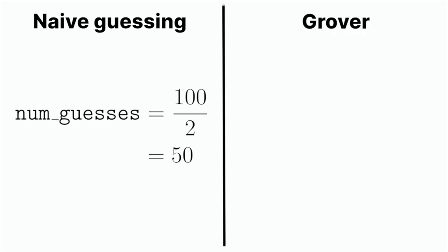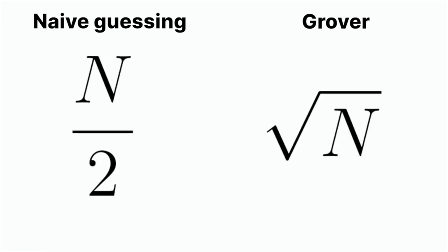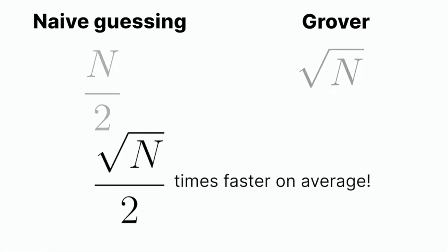What Grover says is that using these quantum ideas, only asking a square root of N, square root of 100, which means 10 questions, we will be able to know what is my favorite number. And this is the important point. The quadratic speedup is in the average amount of questions that we have to do in order to find our element.